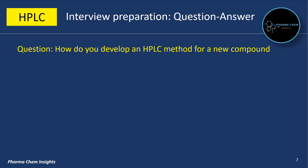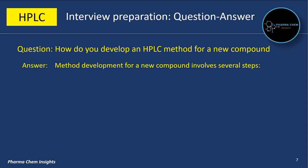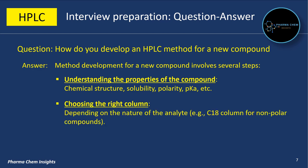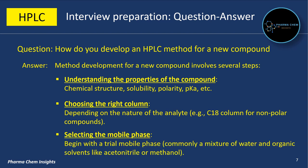The next important question: how do you develop an HPLC method for a new compound? Method development involves several steps. First is understanding the properties of the compound — chemical structure, solubility, polarity, and pKa. Second is choosing the right column depending on the nature of the analyte; for example, a C18 column for non-polar compounds. Third is selecting the mobile phase — begin with a trial mobile phase, commonly a mixture of water and organic solvents like acetonitrile or methanol.